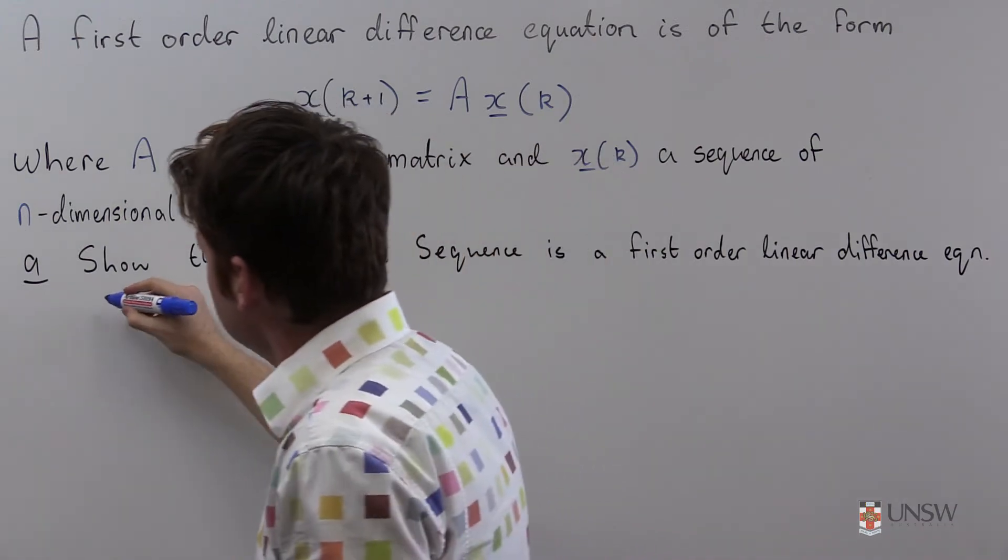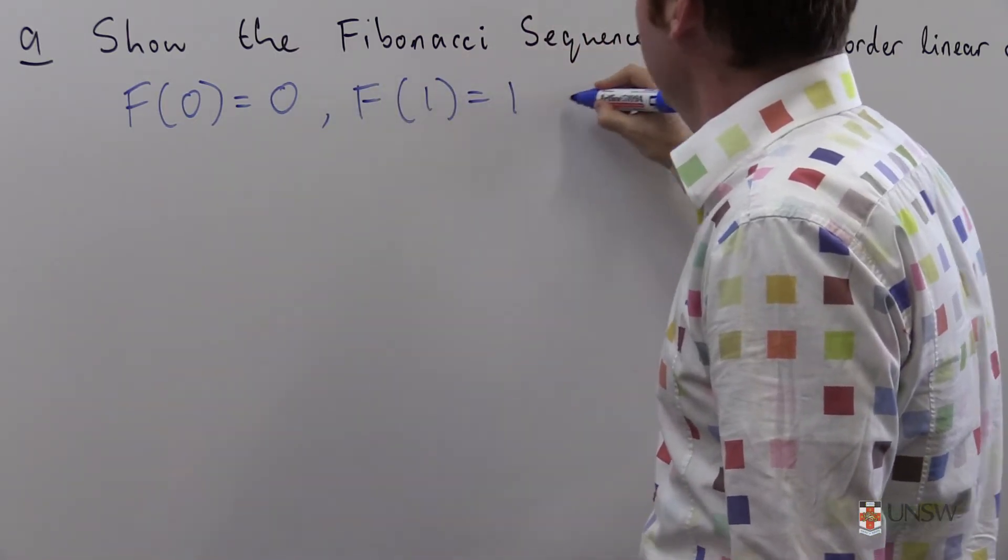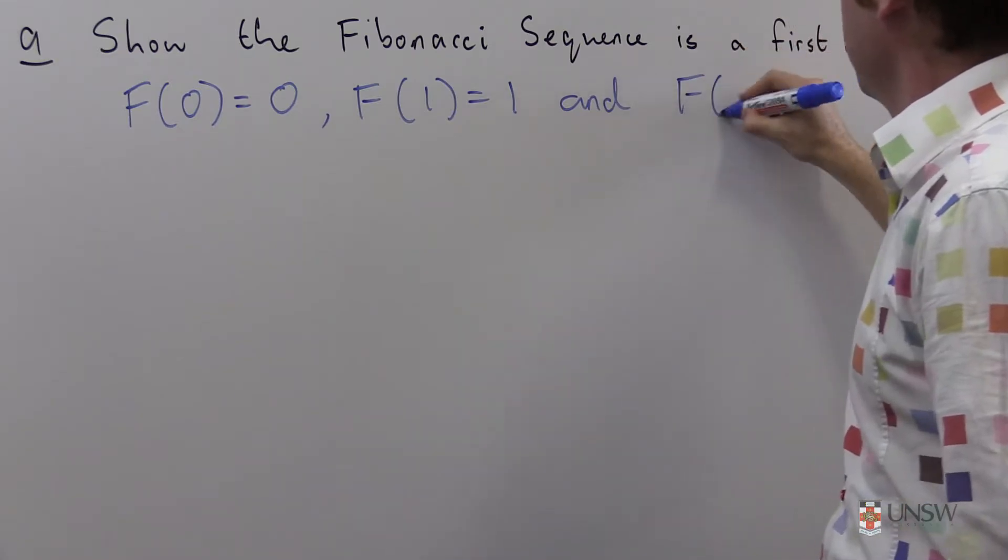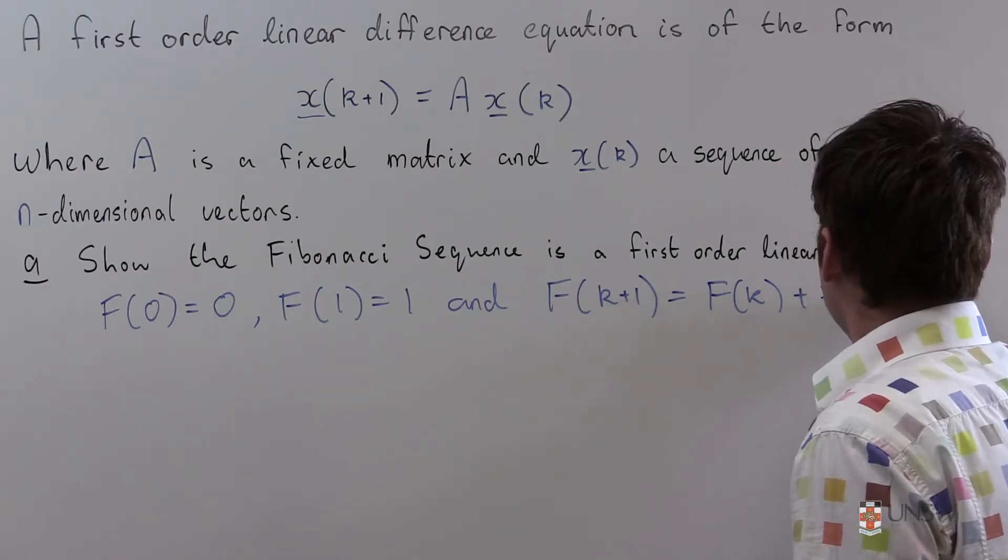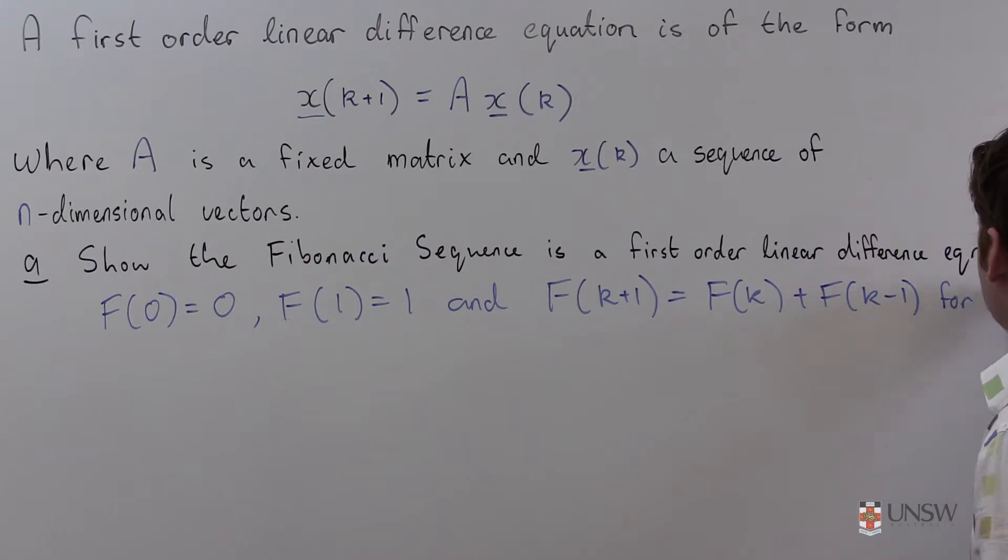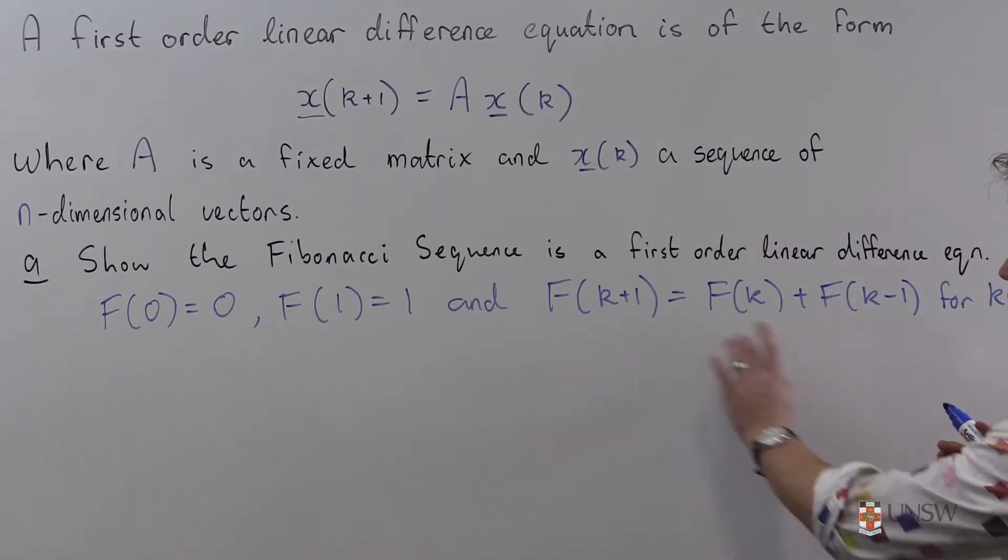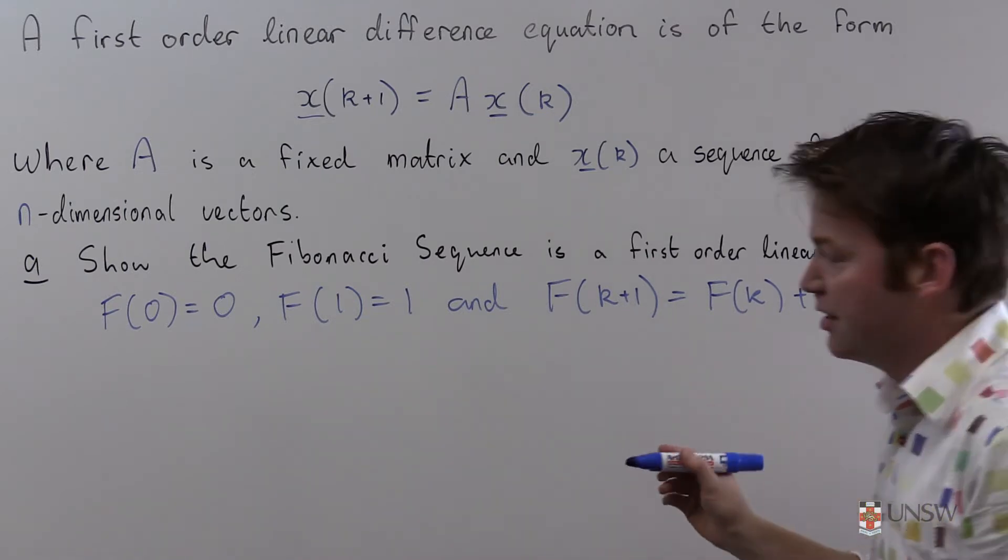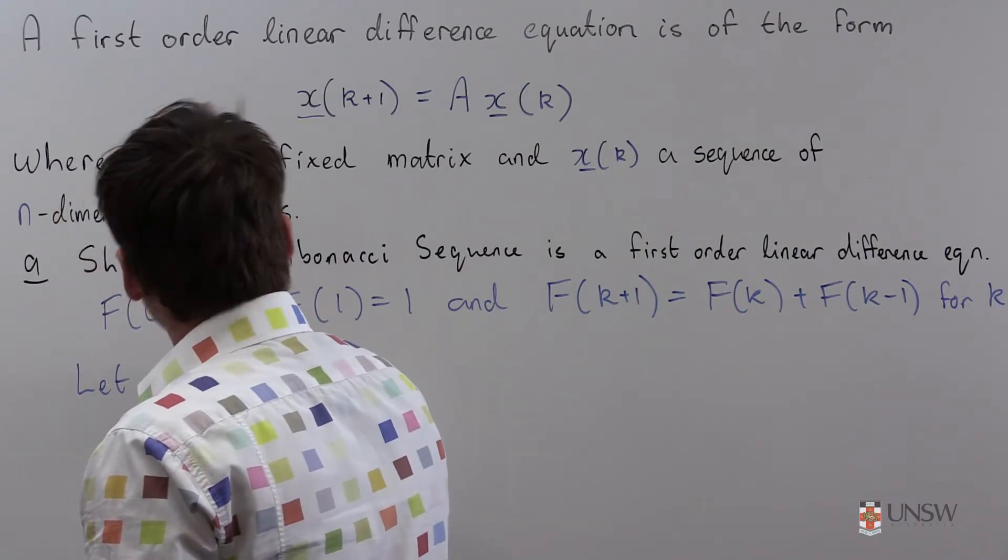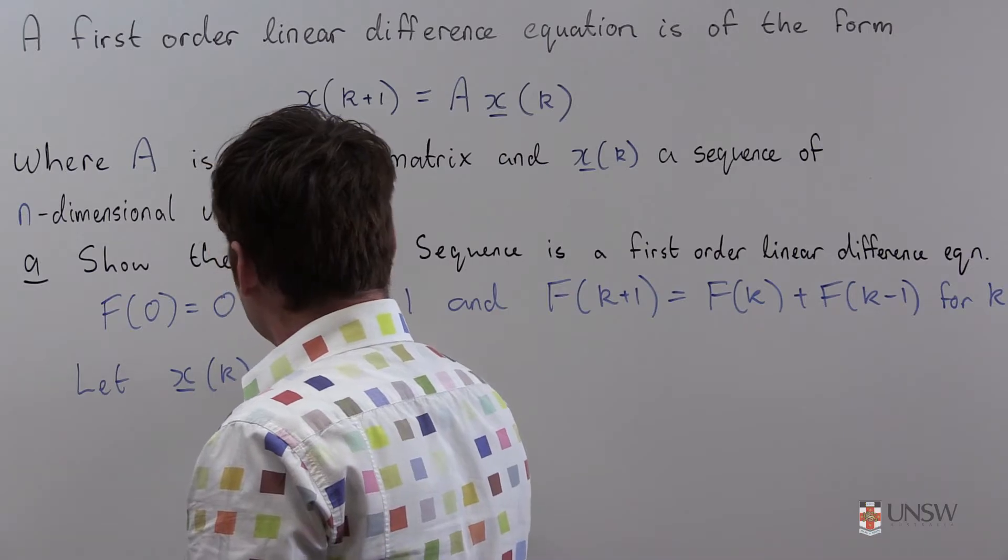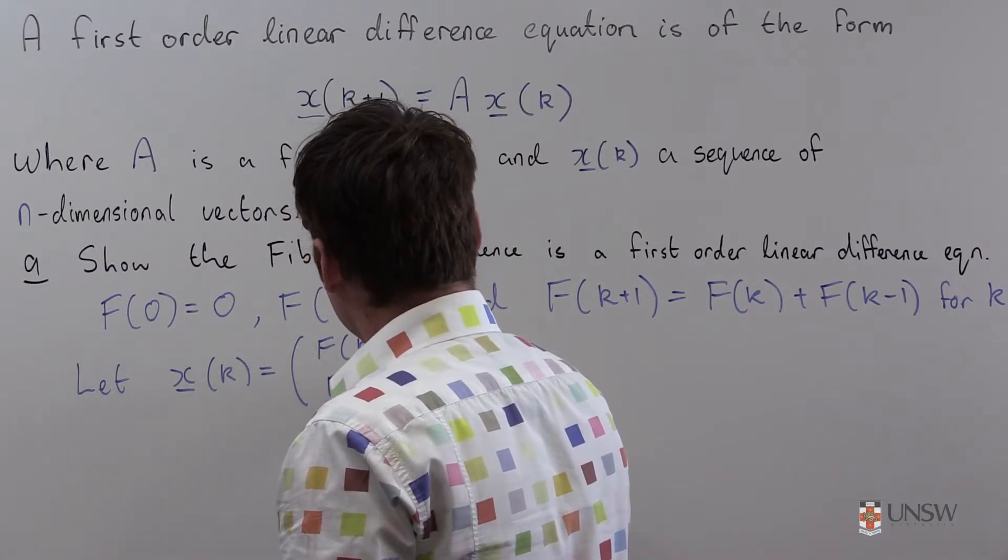Recall the Fibonacci sequence is defined like this: f(0) equals 0, f(1) equals 1, and f(k+1) equals f(k) plus f(k-1) for k greater than or equal to 1. The amount of memory we need to compute the k+1 term is just knowledge of the previous two terms, so I'll write this as two-dimensional vectors. Let x_k equal to f(k) and f(k-1).